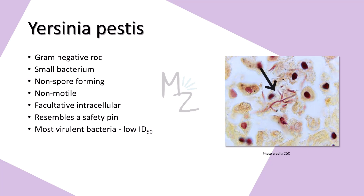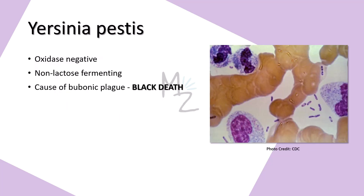This is how Yersinia pestis looks like under the microscope — it is red colored because it's gram-negative. Yersinia pestis is oxidase negative, non-lactose fermenting, and is responsible for causing bubonic plague, also known as black death. This is the safety pin appearance of Yersinia pestis under the microscope. Yersinia has three species: Yersinia pestis — the one we are discussing today — Yersinia enterocolitica, and Yersinia pseudotuberculosis.